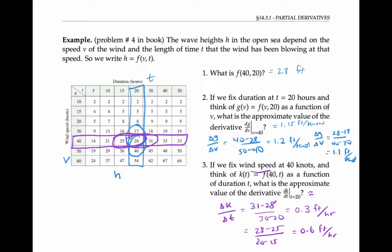Taking the average, we get 0.45 feet per hour as our best estimate of the rate of change of f in the t direction when we fix v at 40.